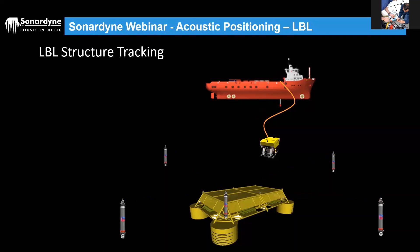The reference transponders in the array respond with individual responses — each with its own address. The transponder on the structure gathers the two-way travel time data and relays it back to the ROV, which sends it up to the PC on the vessel to calculate position relative to the array.